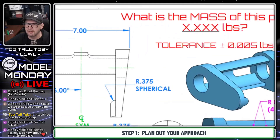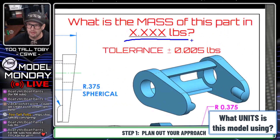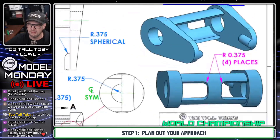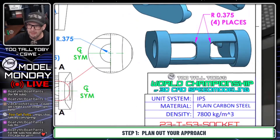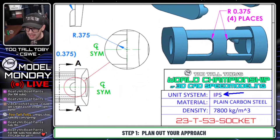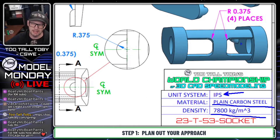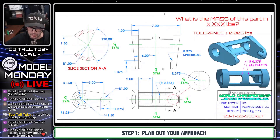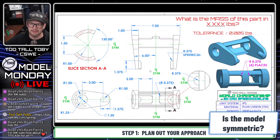The first thing I do is look at the units. The units are in pounds — most of our models are in millimeters and grams, but this model is in pounds. The units are IPS, the material is plain carbon steel, and the density is 7,800 kilograms per meter cubed.